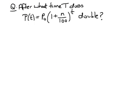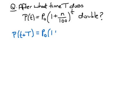The question we want to ask is: after what time capital T does P of little t double? We start at little t, go on for a time capital T, and require that it is twice the starting amount. So P(t + T) is equal to P₀ times (1 + n/100) to the power of little t plus capital T.